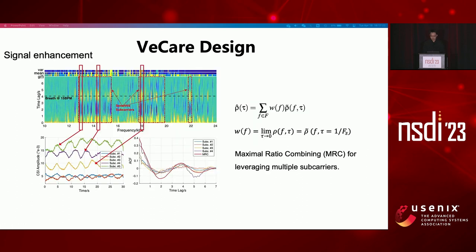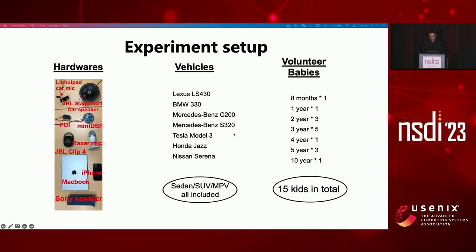Another practical issue is related to subcarrier diversity. In the ACF matrix, only a small number of subcarriers can capture distinctive patterns, requiring an effective algorithm to combine all subcarriers. Since the waveform of different subcarriers may be in totally reversed directions, it is not a good idea to add them directly. So we employ a maximum ratio combining algorithm commonly used in signal processing, where the combining weights are selected as the motion statistics. With this algorithm, the breathing pattern becomes more obvious than from each subcarrier alone.